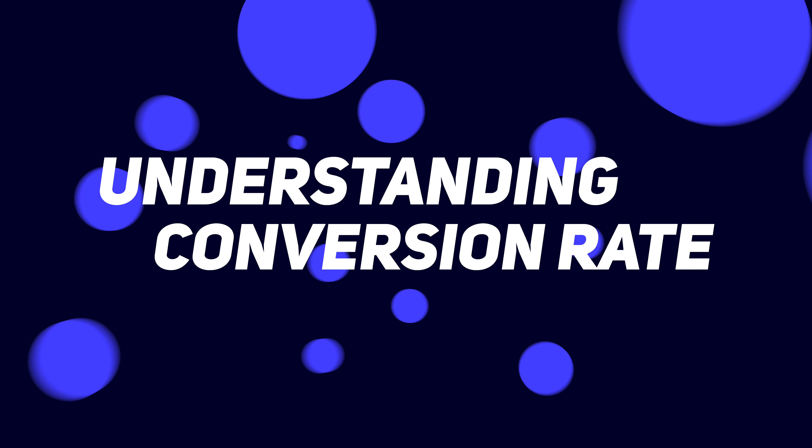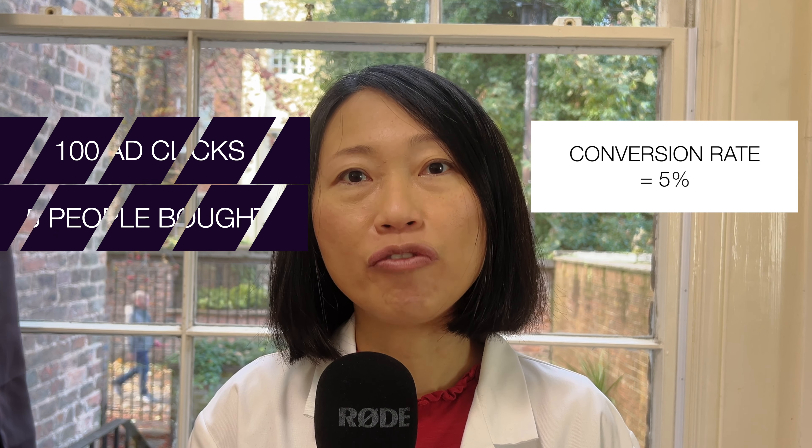Next, we need to talk about the conversion rate. This is super important because it helps us figure out how many people are actually buying something after clicking on your ad. A conversion is when someone who clicks on your ad doesn't just look around — they actually buy something. The conversion rate is the percentage of people who visit your website and then make a purchase. For example, if 100 people click on your ad but only 5 of them end up buying a mug, your conversion rate is 5%.